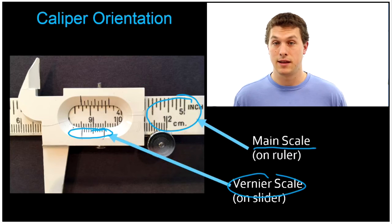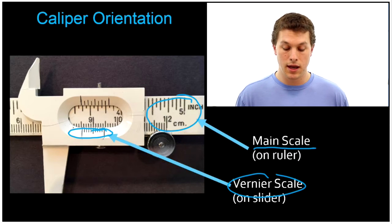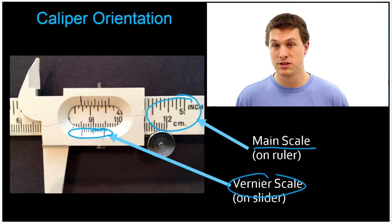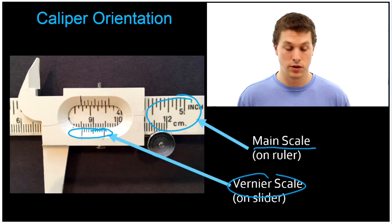They're on the thing that slides. So on the slider we have the vernier scale, and on the ruler we have the main scale, and these two scales are going to combine to give us a much more precise measurement.